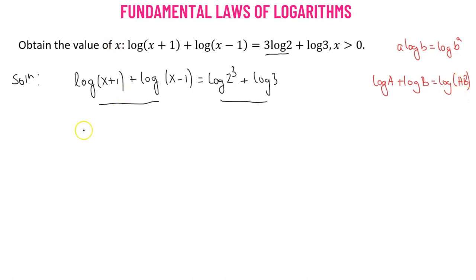Let's use this property. This will give us log of x plus 1 multiplied to x minus 1 and that's equals to log of 2 cubed. So 2 cubed is 8 multiplied to 3. This will be log of x squared minus 1 equals to log of 24.